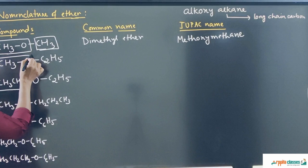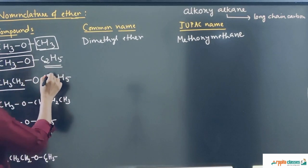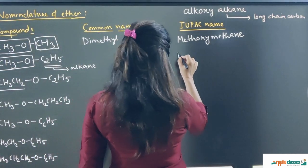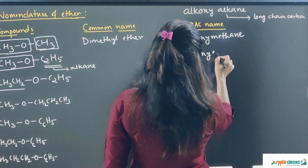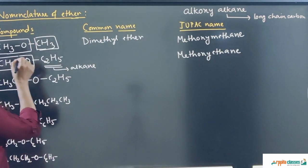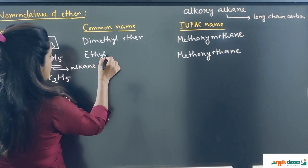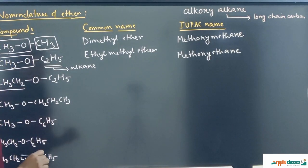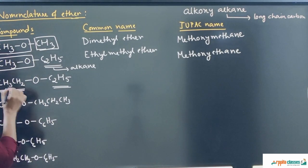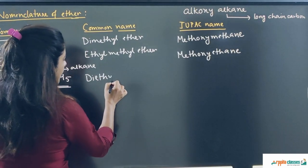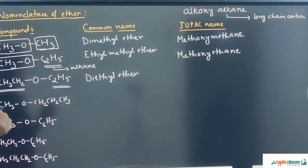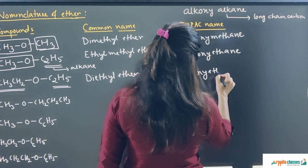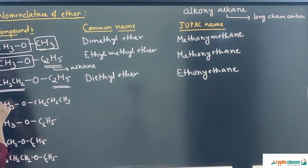For the next compound, one side has one carbon (methyl) and the other side has two carbons (ethyl). The short-chain carbon (one carbon) comes under alkoxy — that is methoxy — and the two-carbon chain comes under alkane as ethane. So the IUPAC name is methoxyethane, and the common name is ethyl methyl ether. For C₂H₅OC₂H₅, both sides are ethyl groups, so the common name is diethyl ether. The alkoxy part of two carbons is ethoxy, and the alkane part is ethane, giving the IUPAC name ethoxyethane.